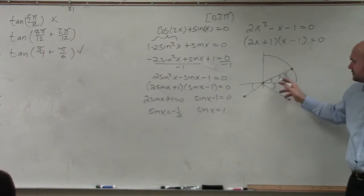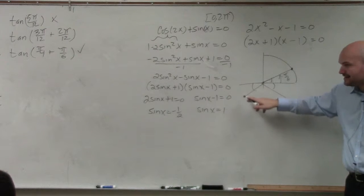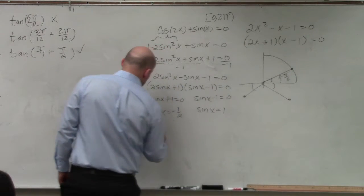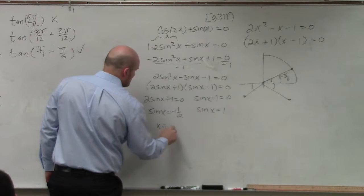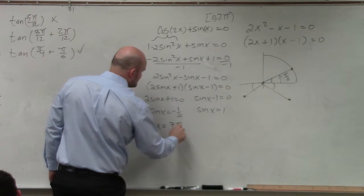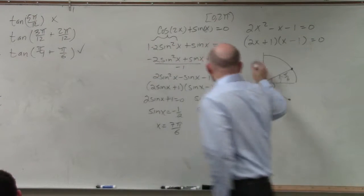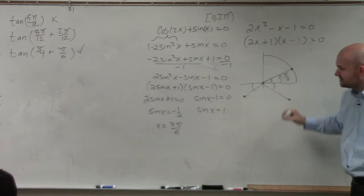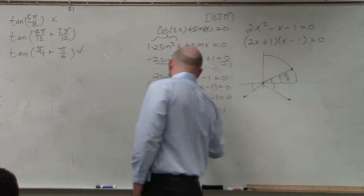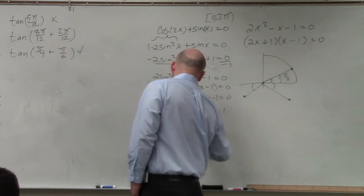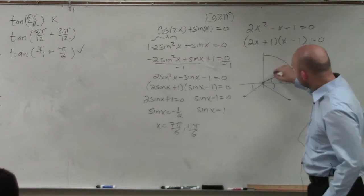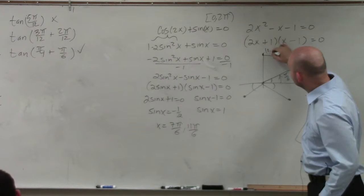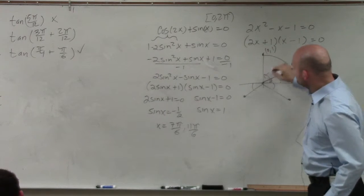So what are those two angles? Well, halfway around a circle is pi. Add an extra pi over 6, and you're at 7 pi over 6. All the way around a circle is 2 pi, or 12 pi over 6. Subtract pi over 6, you're at 11 pi over 6. And then sin is equal to 1 at this point right here. What is that angle? Pi halves.